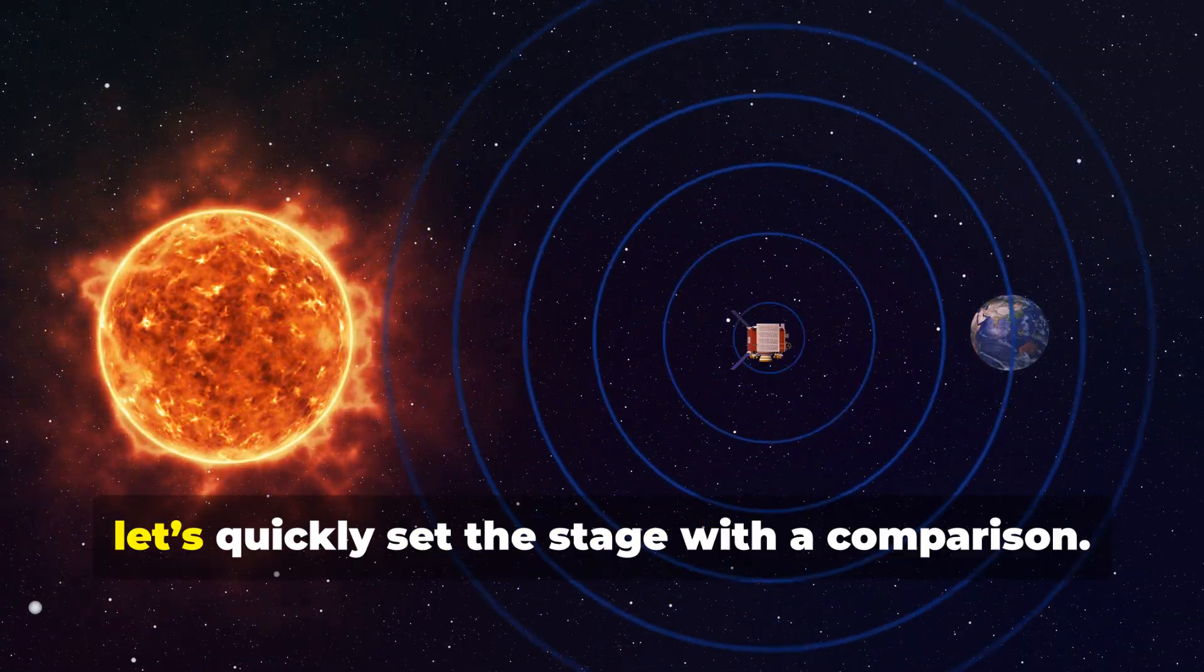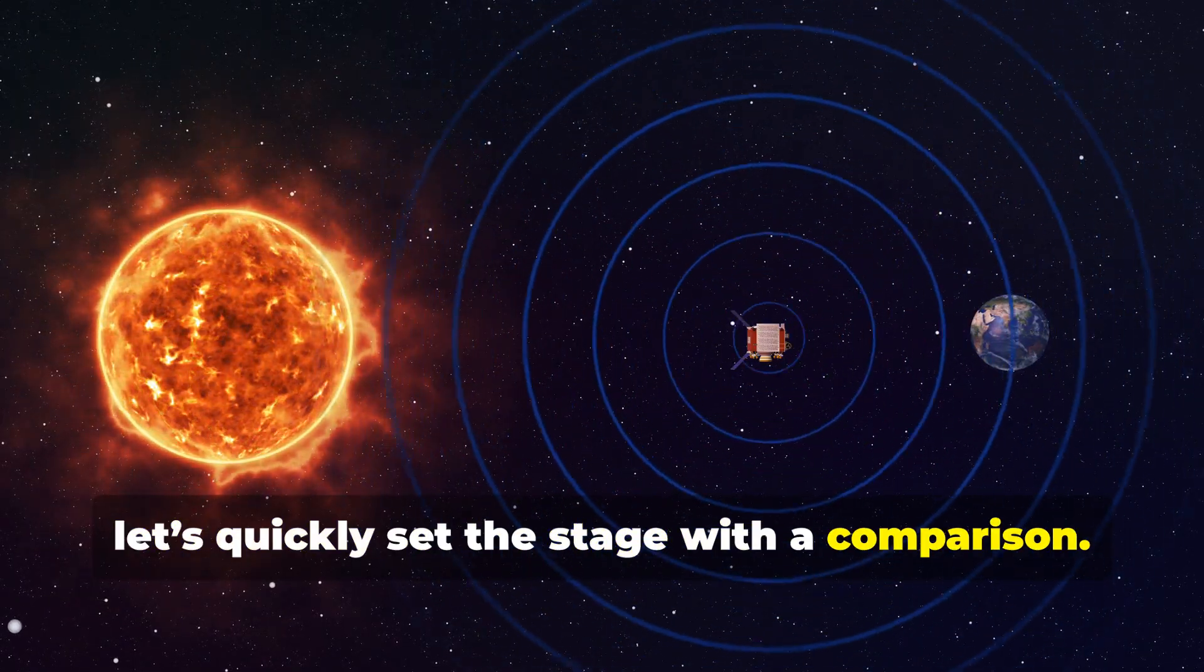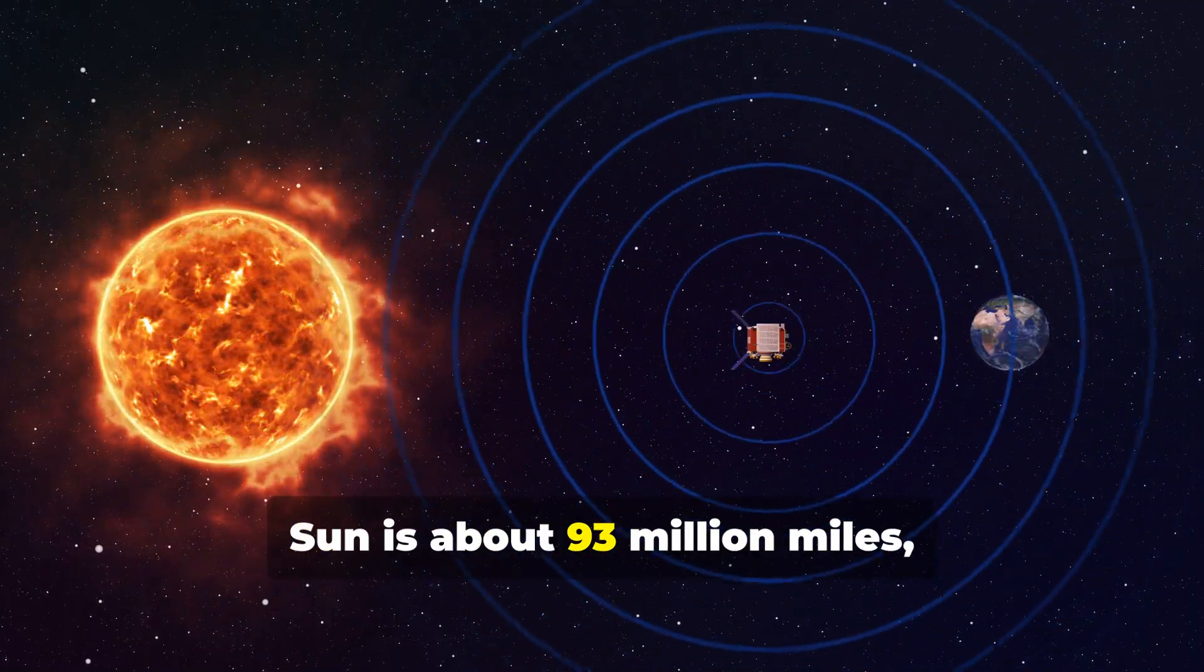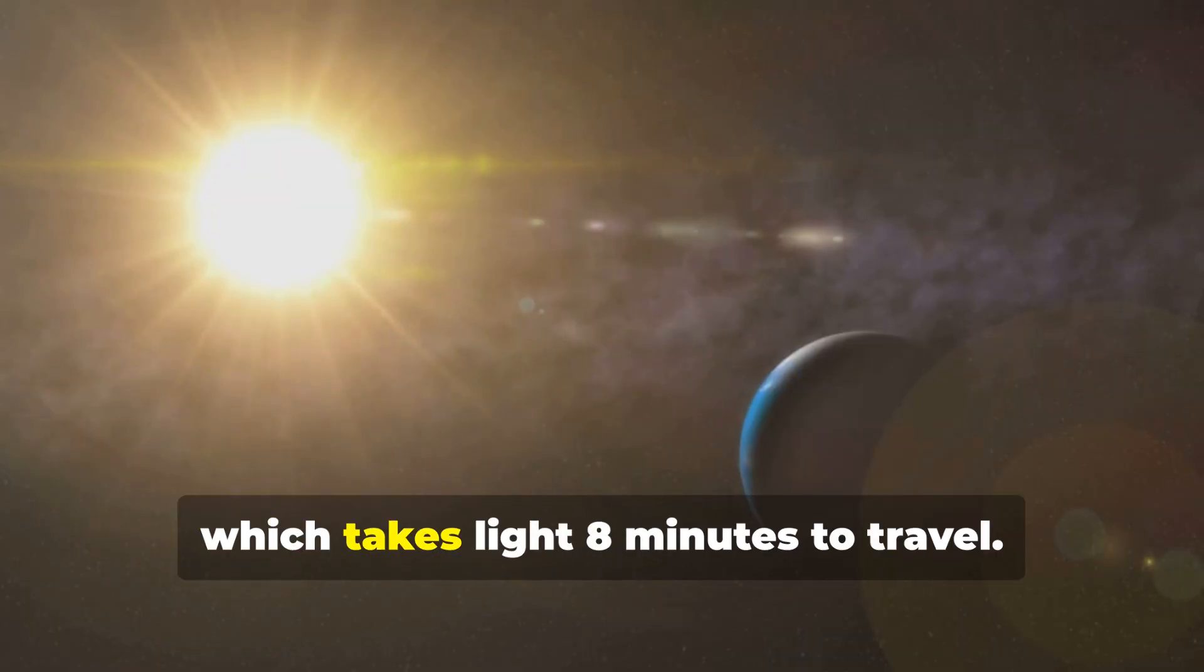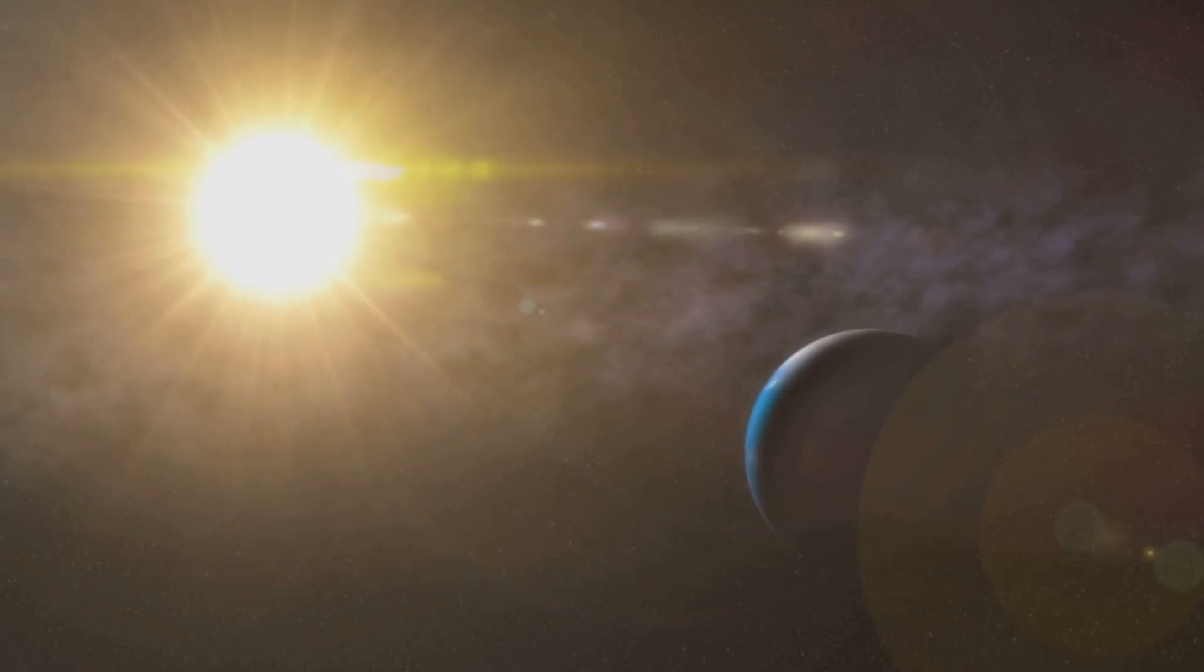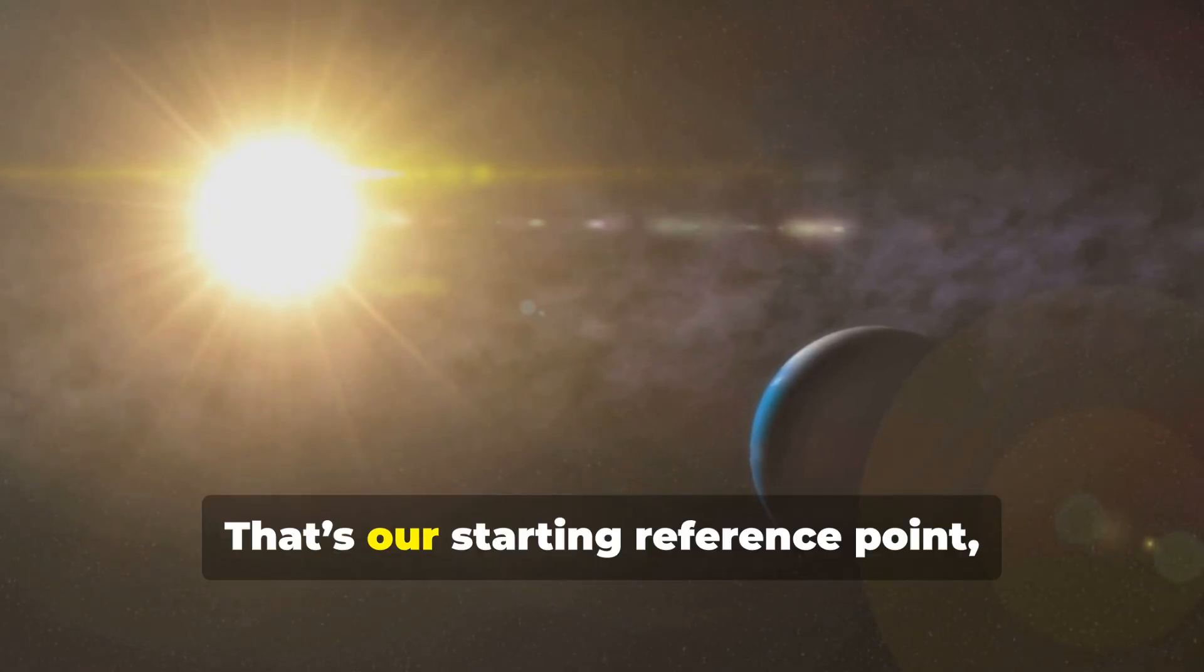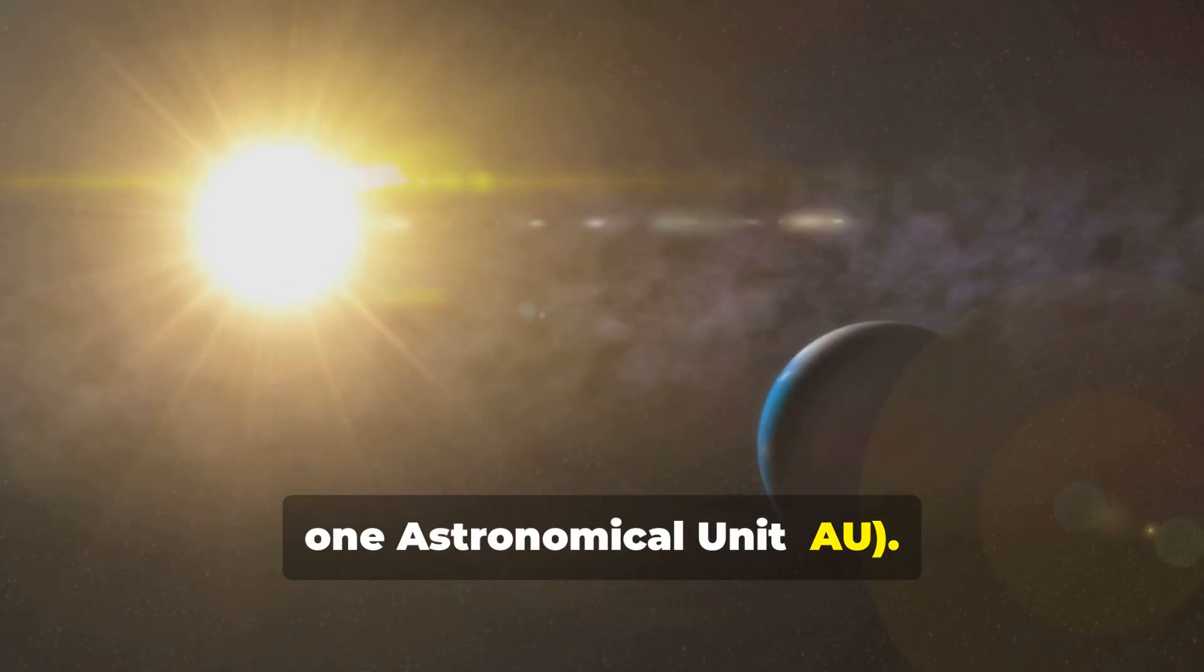Before we start, let's quickly set the stage with a comparison. The distance between the Earth and the Sun is about 93 million miles, which takes light eight minutes to travel. That's our starting reference point, one astronomical unit, AU.